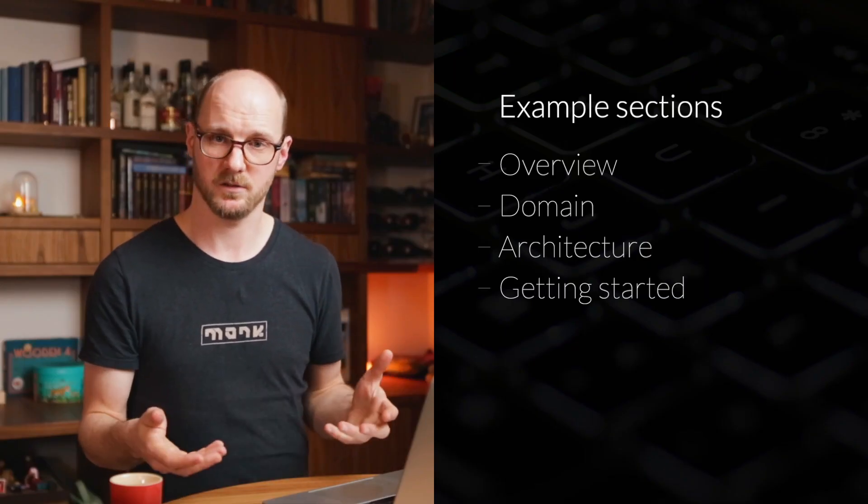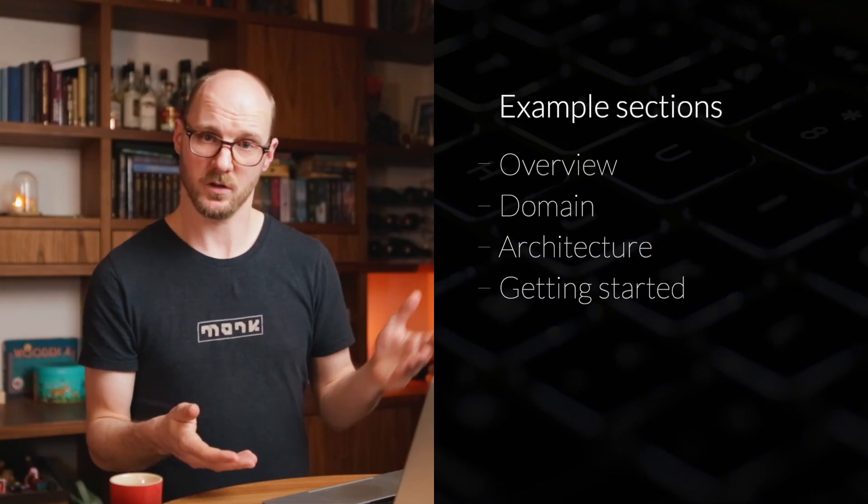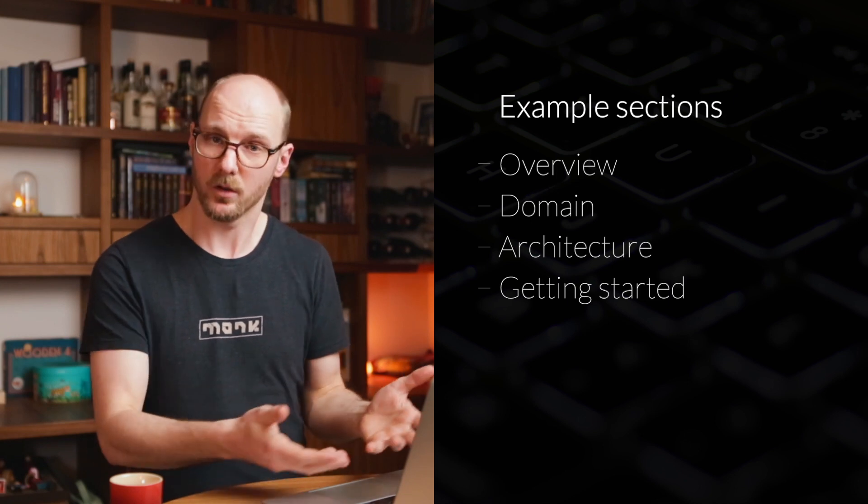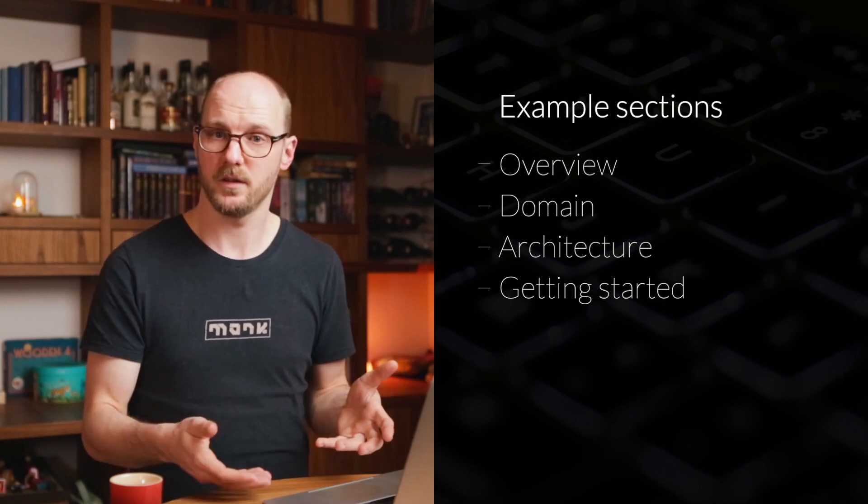Another common section is getting started. Think of a list of instructions telling you how to set up your local development environment and how to run the app locally. Preferably it also includes steps for making your first commit and pushing to production for the first time. The good thing about this section is you can test it very easily — it's very measurable. After following these steps, either it's working or it's not. If it's not working, the steps failed — they're incomplete or the environment isn't reproducible, which is something you want to improve.